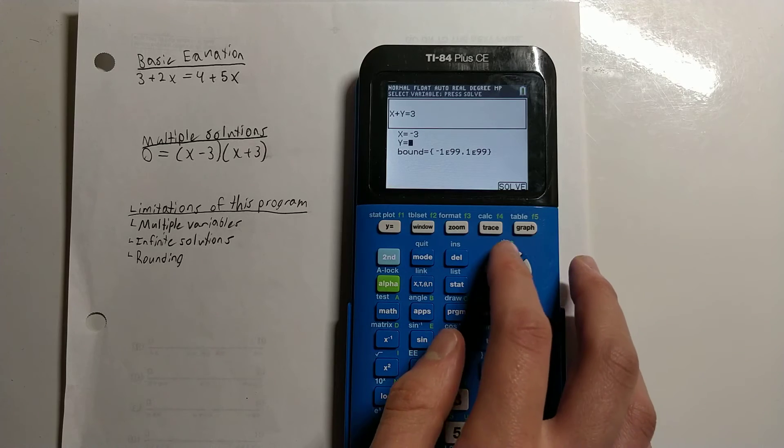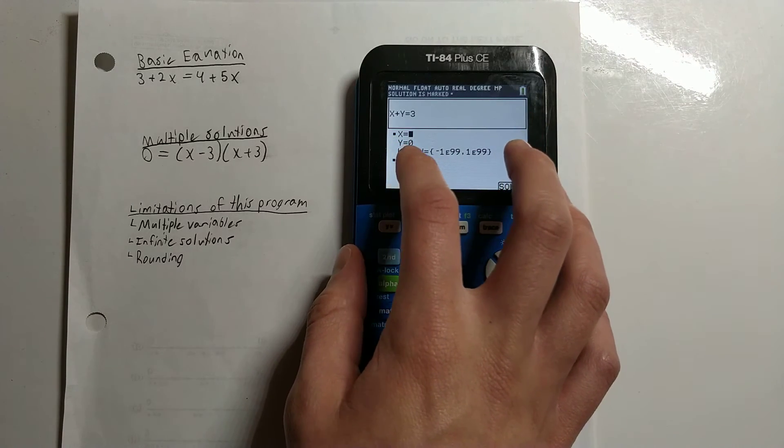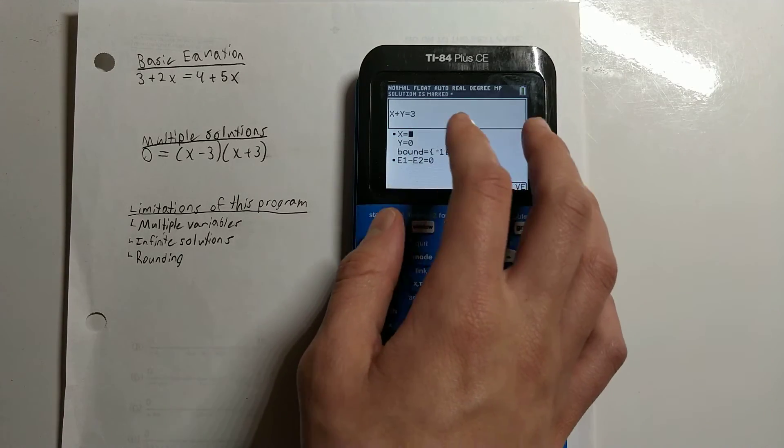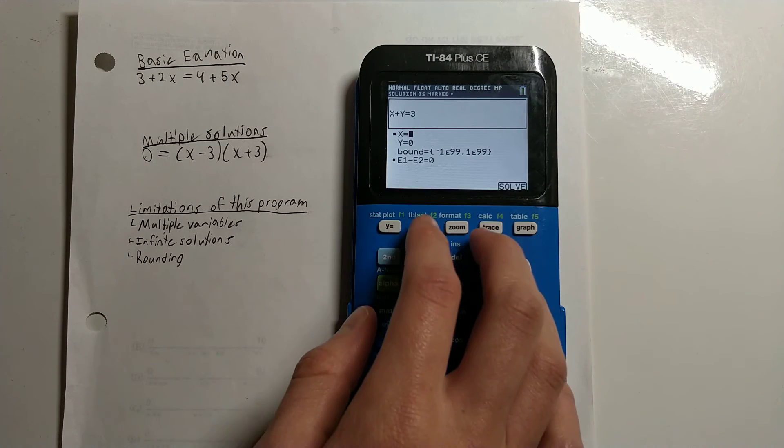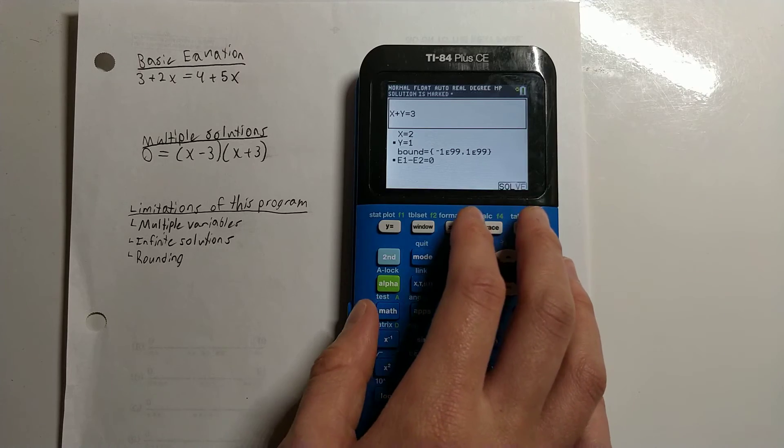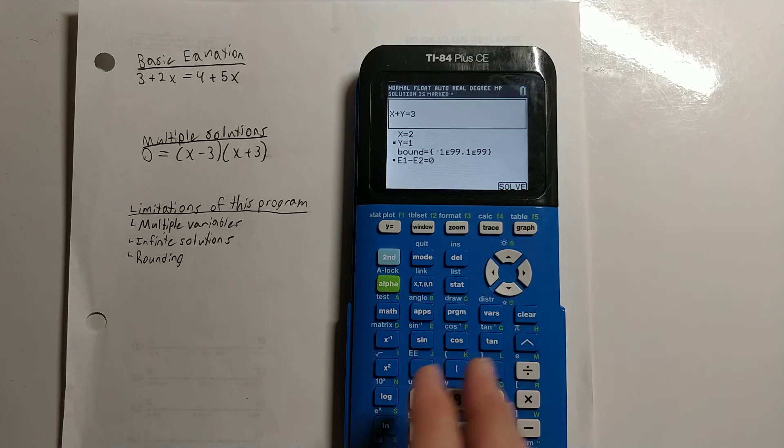But if we did that and we solved for x, you can see here that it is assuming that y is equal to 0 and it's just solving for x. This can be useful if you want to type in numbers into the variables and then solve for a certain variable, but you can't solve an equation that has multiple unknown variables in it.